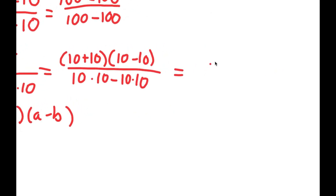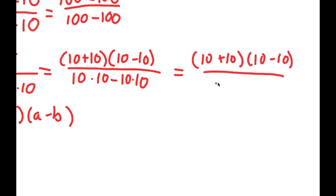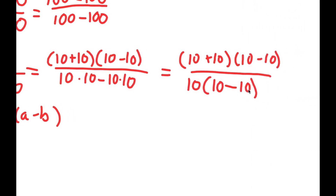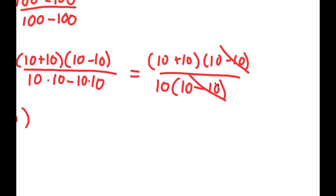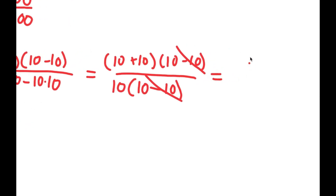And now this is the same thing as 10 plus 10 times 10 minus 10 over — for my denominator, I'm going to factor out 10. So if I factor out 10, I get 10 times — 10 times 10 divided by 10 is simply 10, and again, 10 times 10 divided by 10 is 10. So I have 10 times 10 minus 10. Now, what I'm going to do is cancel out these two 10 minus 10s. If I cancel these out, I get 10 plus 10 over 10.